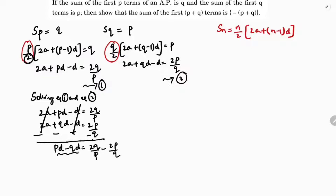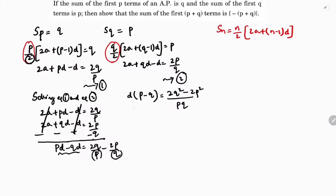Taking D common on the left side gives D into P minus Q. On the right side, taking LCM as PQ: for 2Q by P, multiplying by Q gives 2Q squared; for 2P by Q, multiplying by P gives 2P squared. So the right side becomes 2Q squared minus 2P squared over PQ.